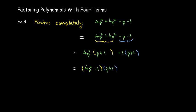And so, here's a word of caution. I'm not done yet. This is not factored completely. The instructions will always say factor completely. Well, what else can I factor? Well, I can't factor p plus 1, but I can factor 4p squared minus 1. That is the difference of 2 squared.